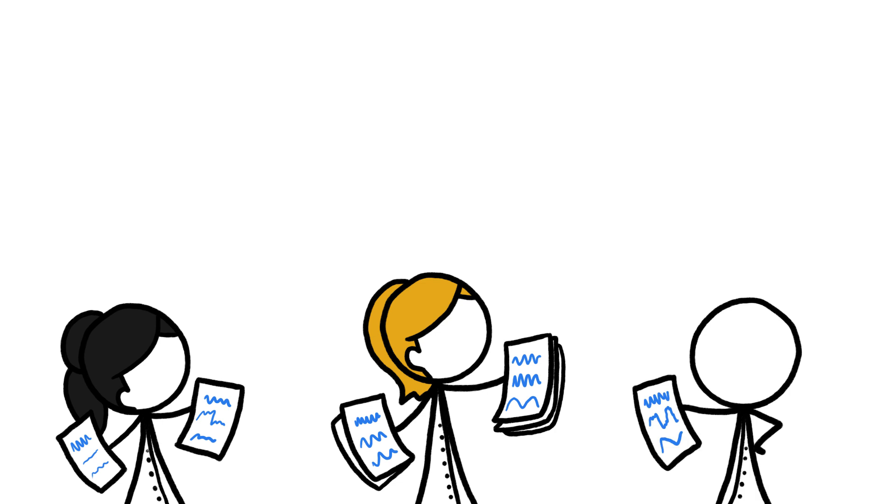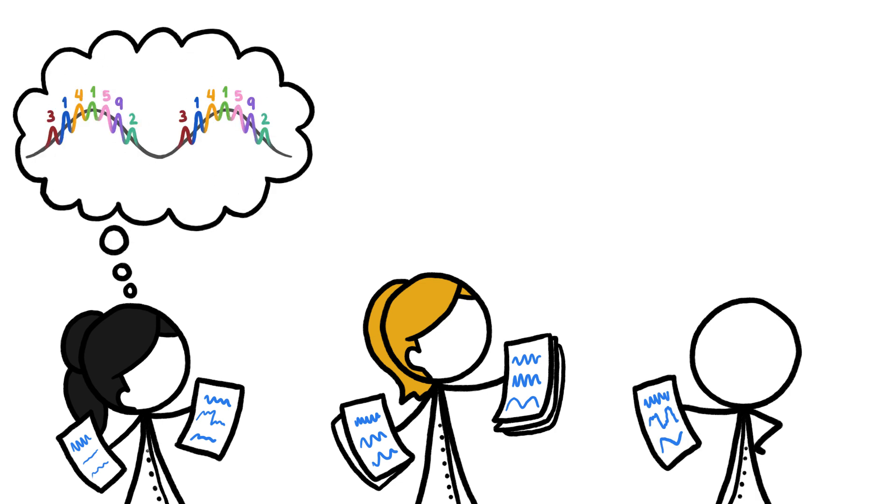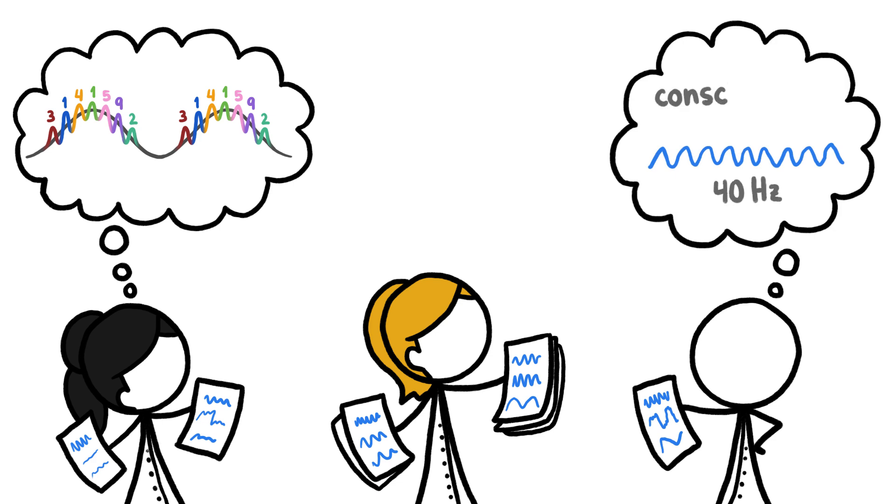We have lots of other ideas about what exactly brain waves do, from holding information like phone numbers in our minds to dictating whether we're even conscious.